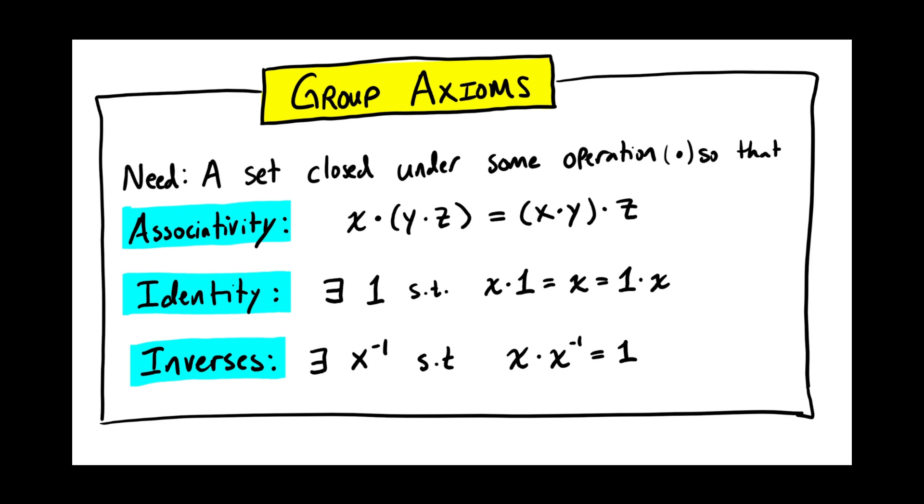So, if two groups are the same, you not only need a bijection between the sets they're made of, you also want to make sure the bijection doesn't break the group rules.